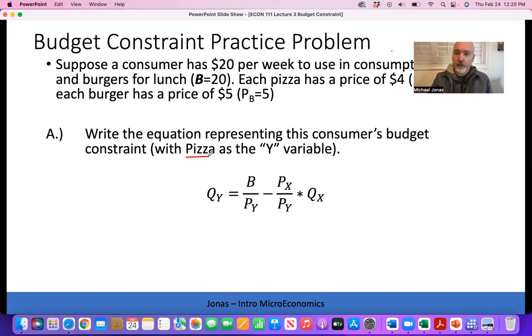B will be 20, that's the budget. The price of burgers is 5, price of pizza is 4. We're basically just plugging in the values we're given. So our budget, 20, divided by the price of pizza, 4, gives us the Y intercept of 5.